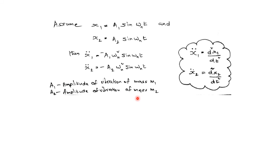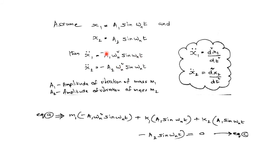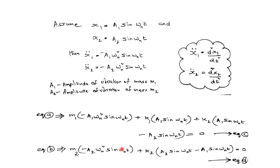A1 and A2 represent the amplitudes of vibration: A1 is the maximum displacement of mass M1 and A2 is the maximum displacement of mass M2. Substituting the expressions for X1, X2, Ẍ1, and Ẍ2 into the equations of motion for M1 and M2, we obtain equations C and D respectively.